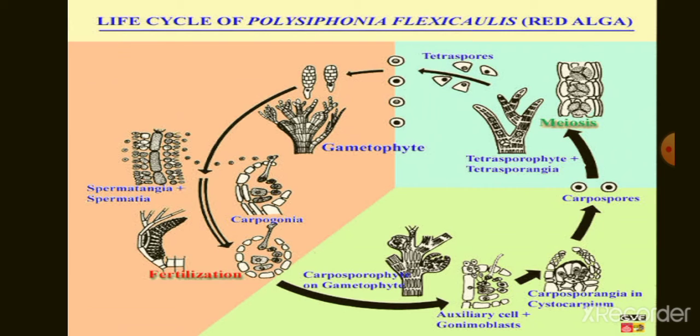Individuals of the higher and complex group also produce tetrasporophyte and tetraspores. The life cycle may be haplontic, haplobiontic, or diplobiontic.